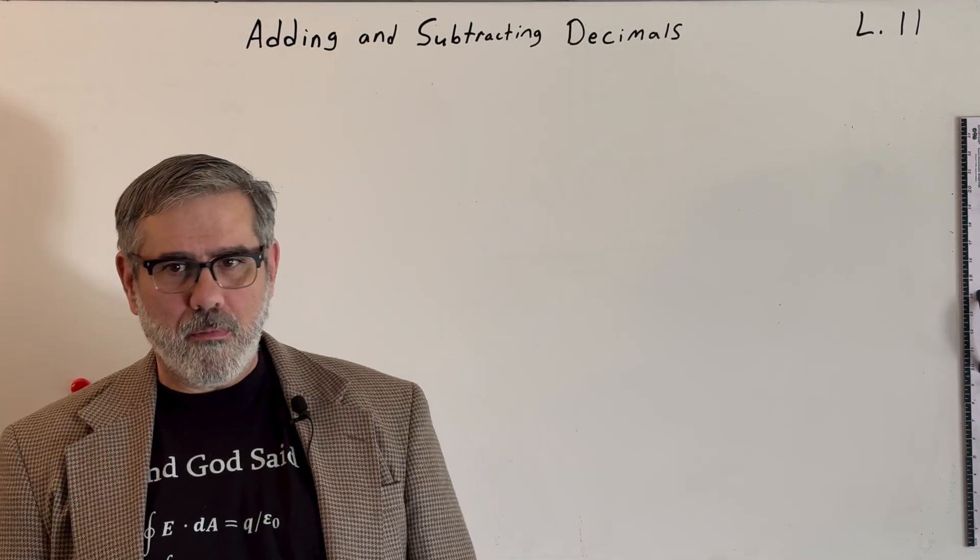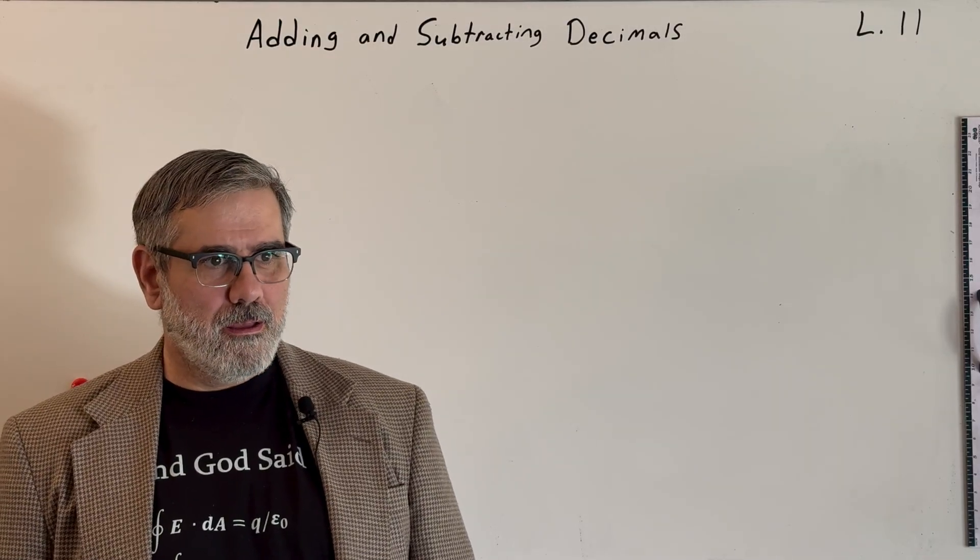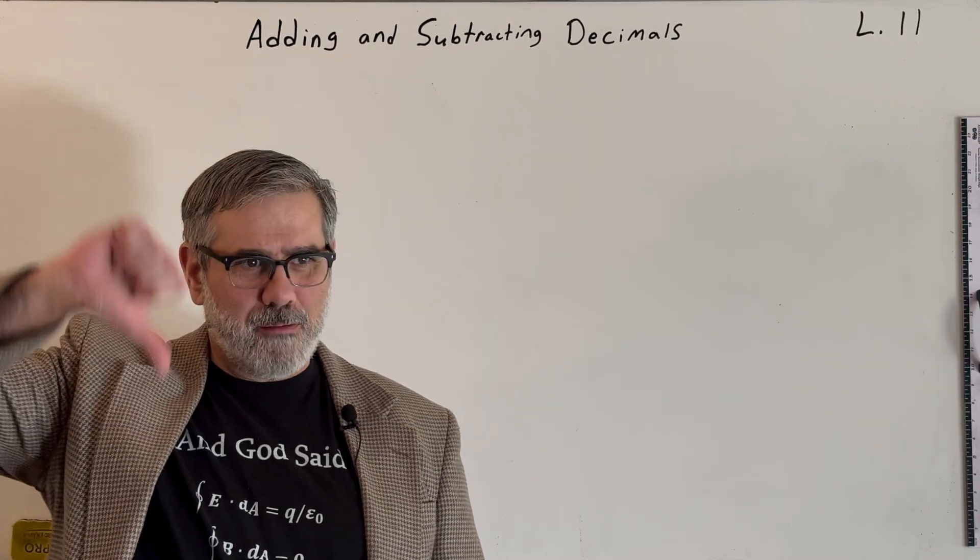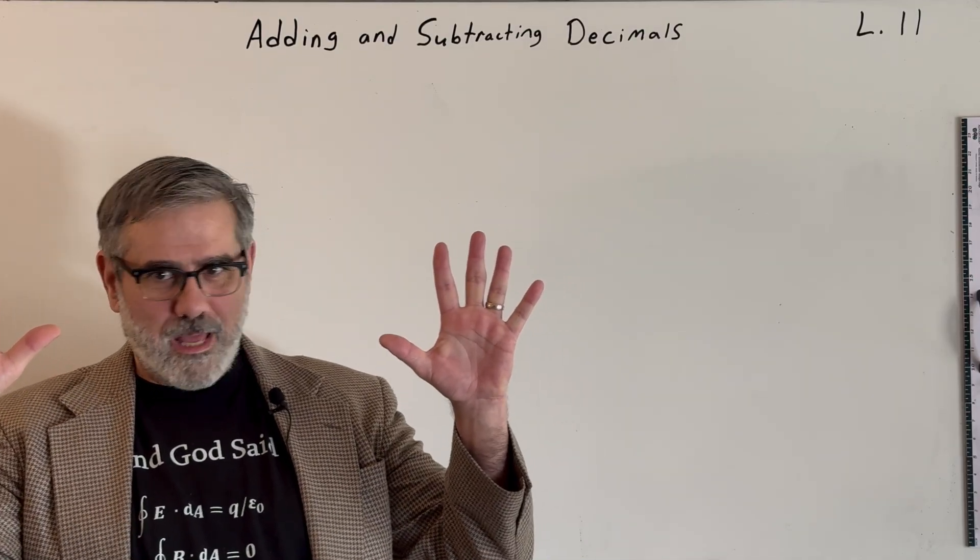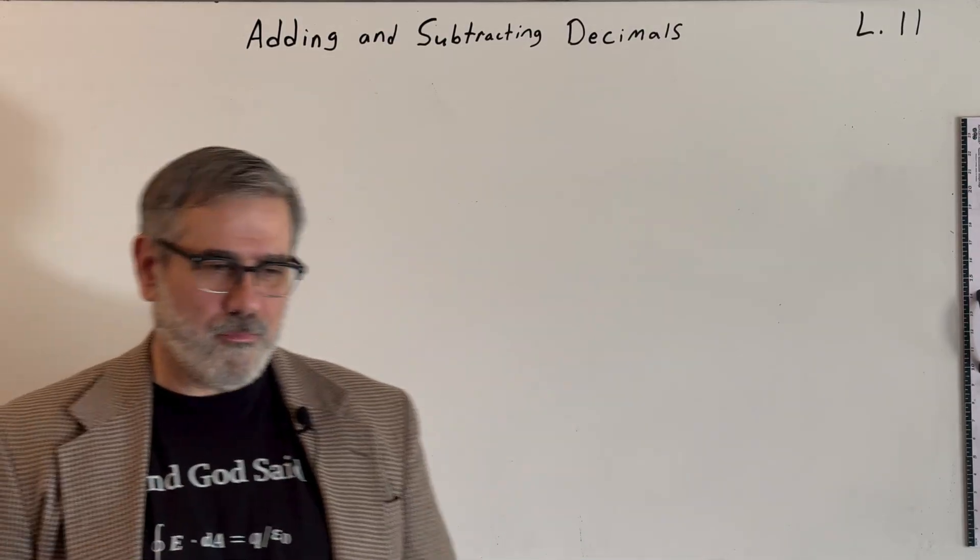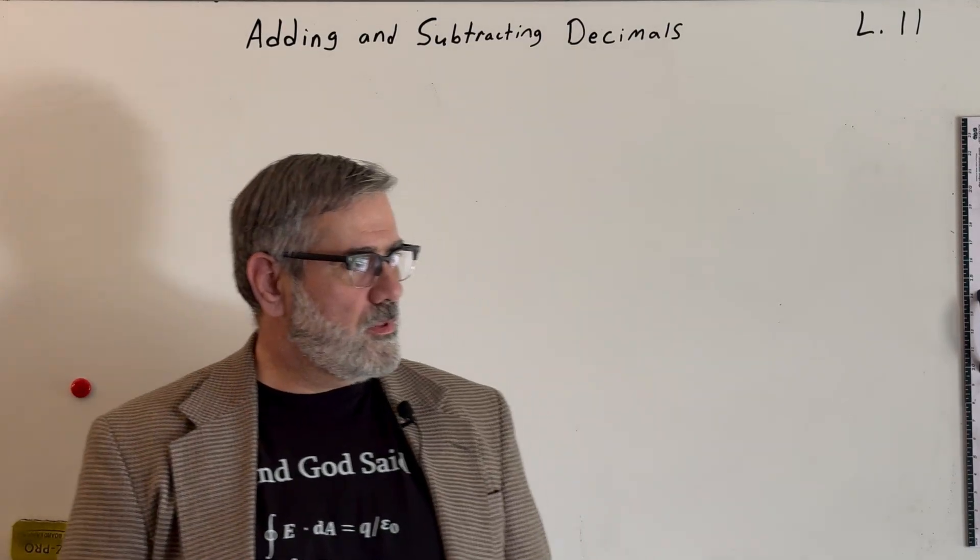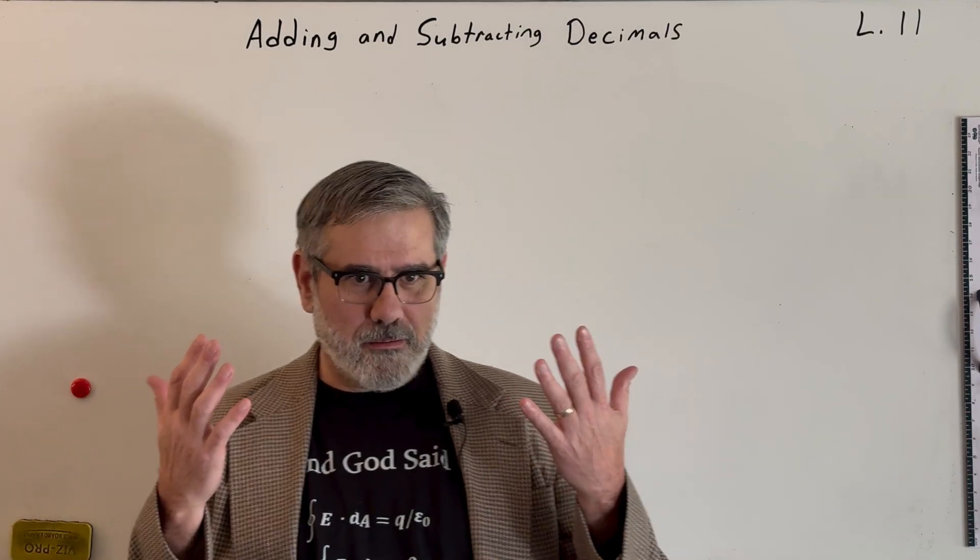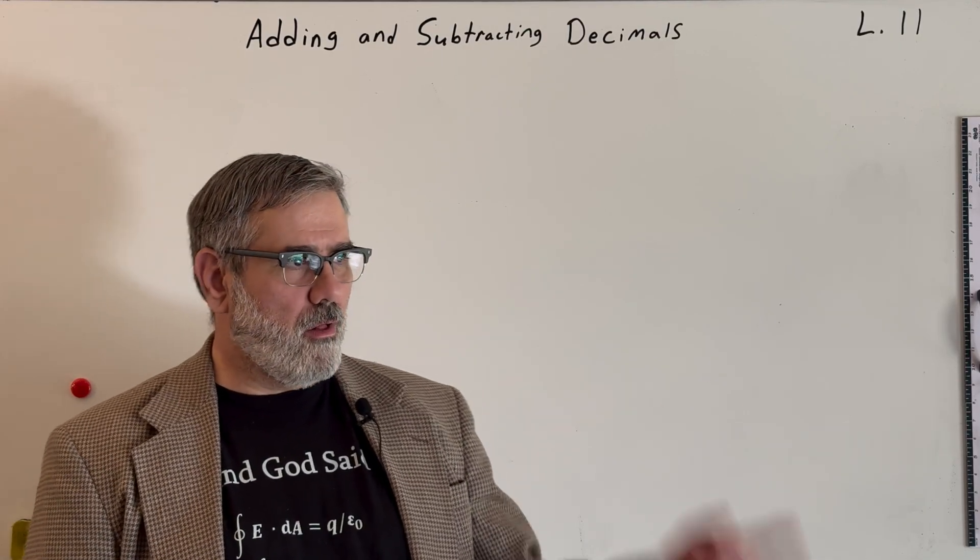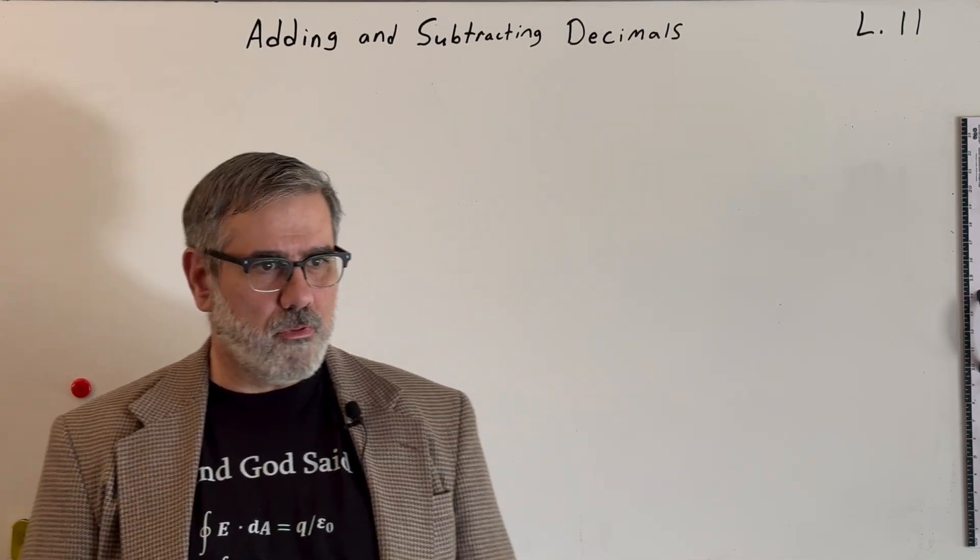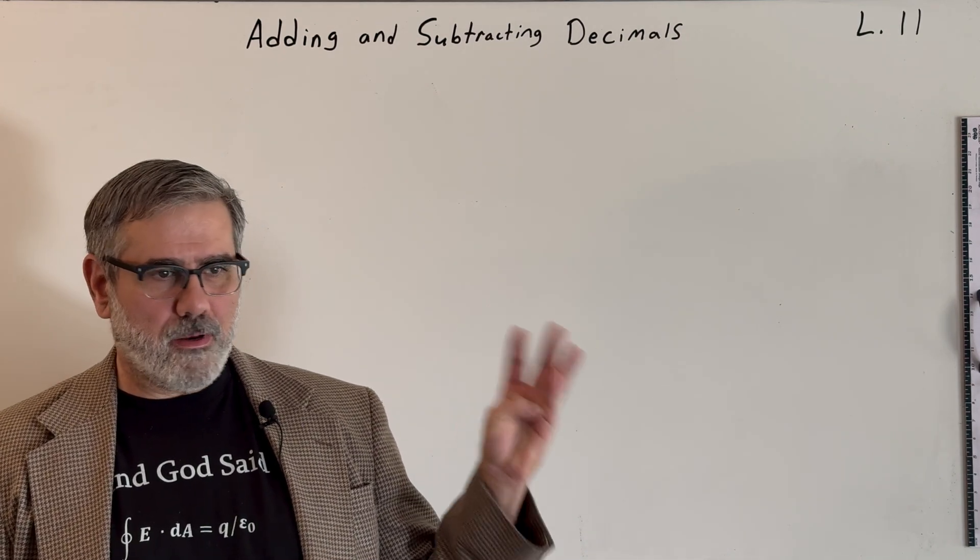Can anyone guess why we might use a base ten number system? Because we have ten fingers. Yeah, we have ten fingers. Exactly. You know, ultimately the origin of these things goes way back. But the ten fingers is not like established in fact, but it's a good guess as to why. Just like the twelve hours in a day, right? The Egyptians with their clocks, right? They had a counting system that was based on a base twelve counting system.